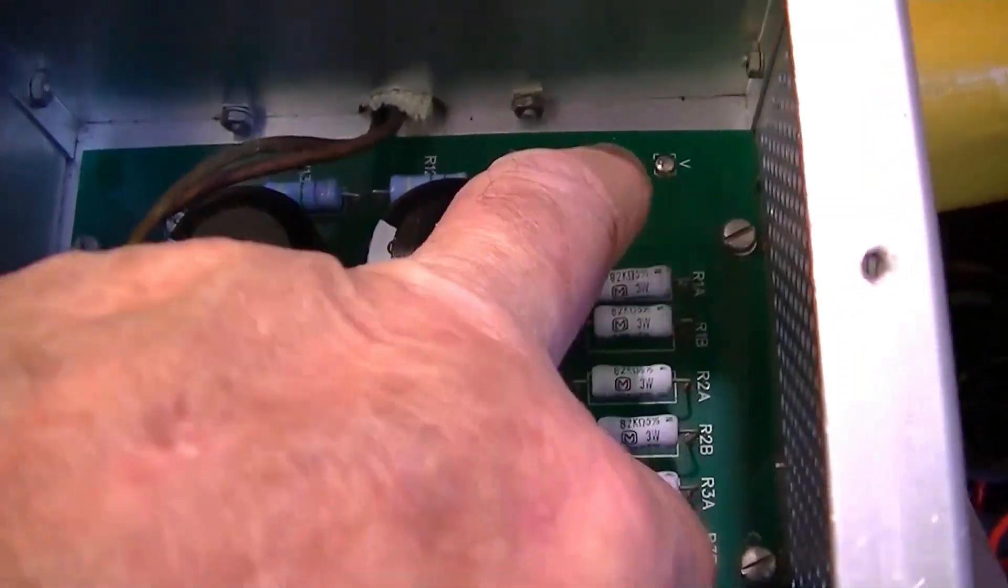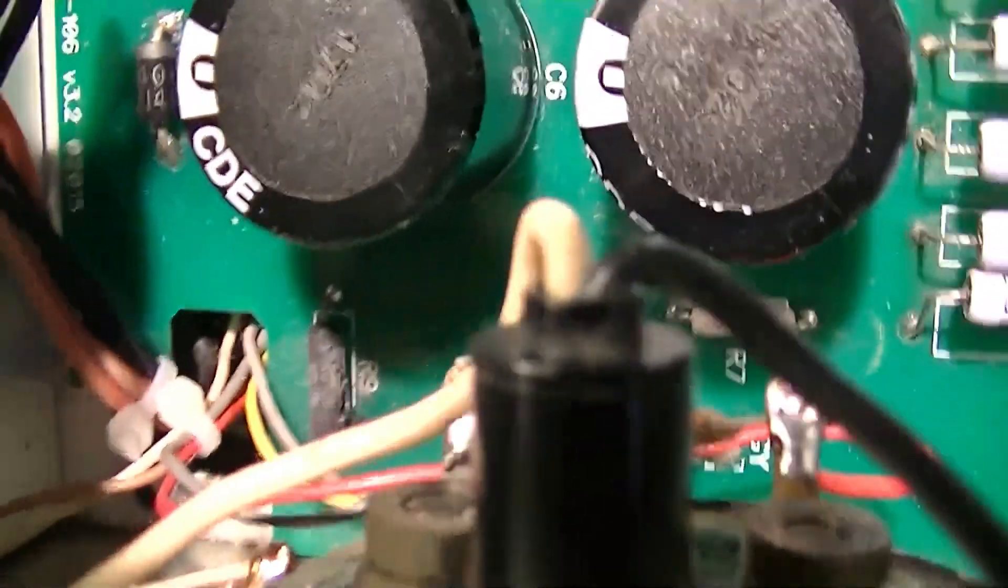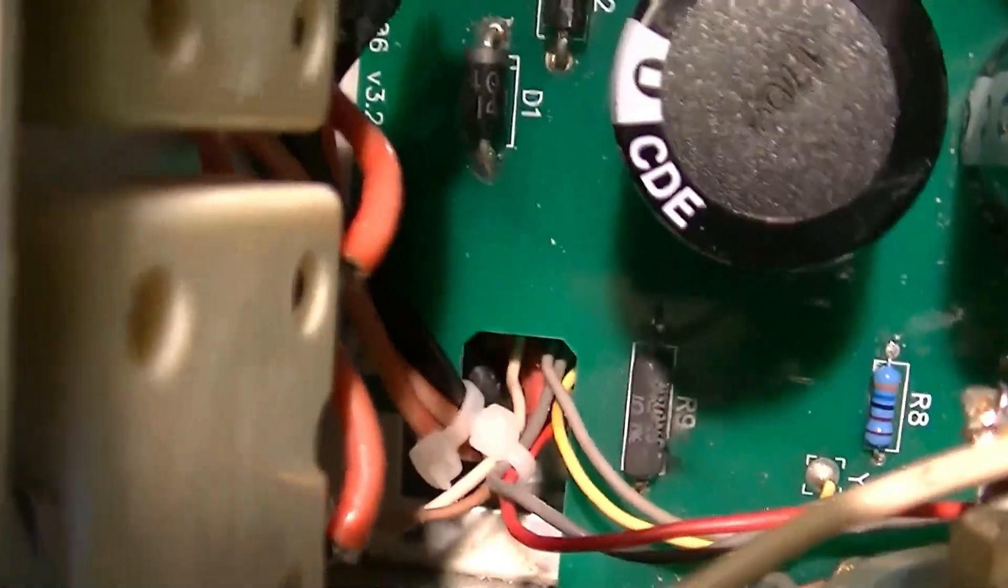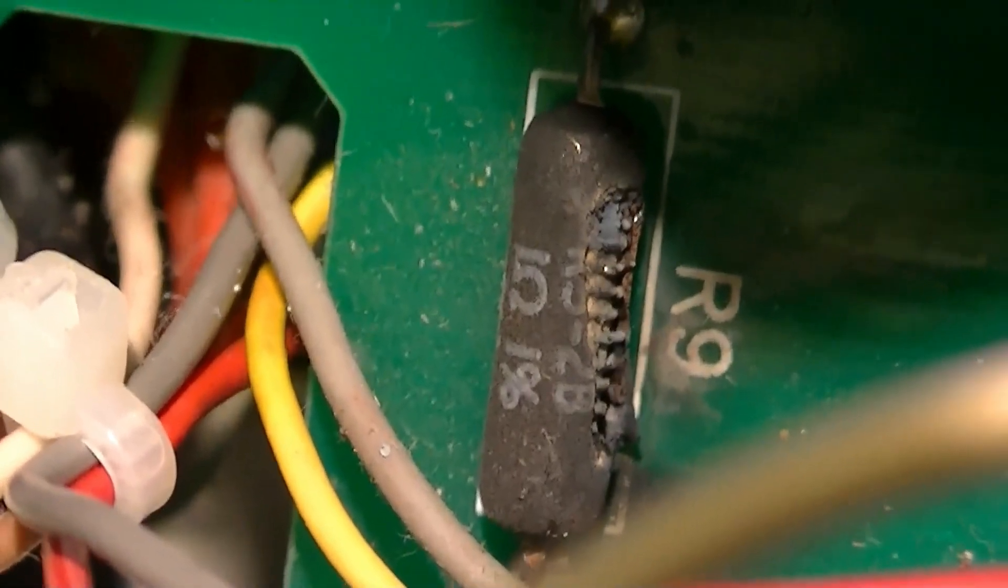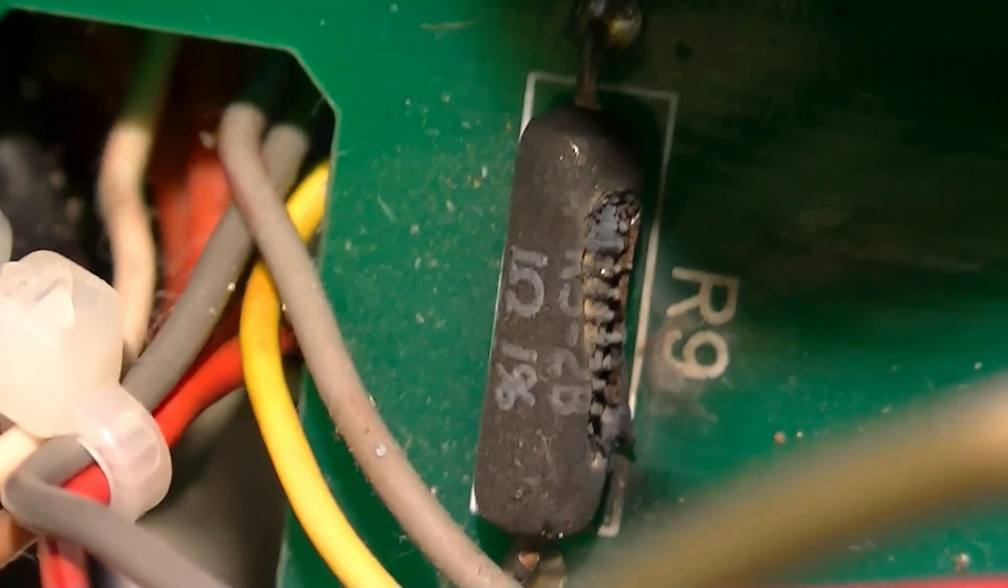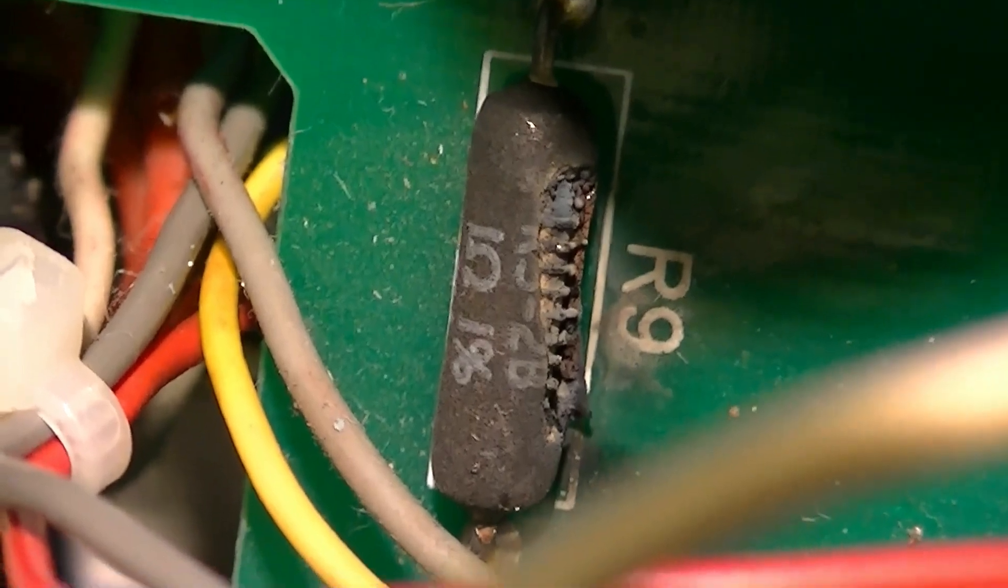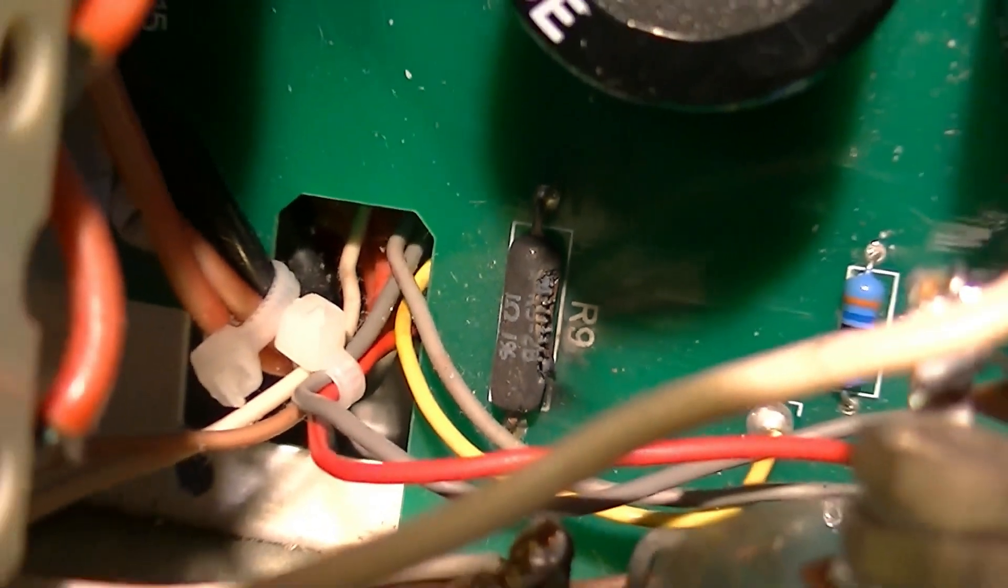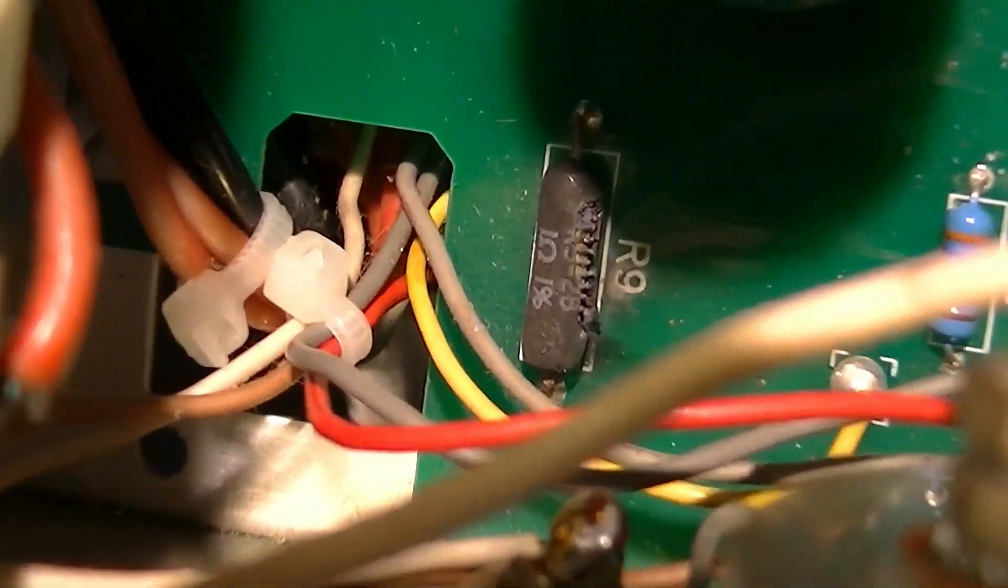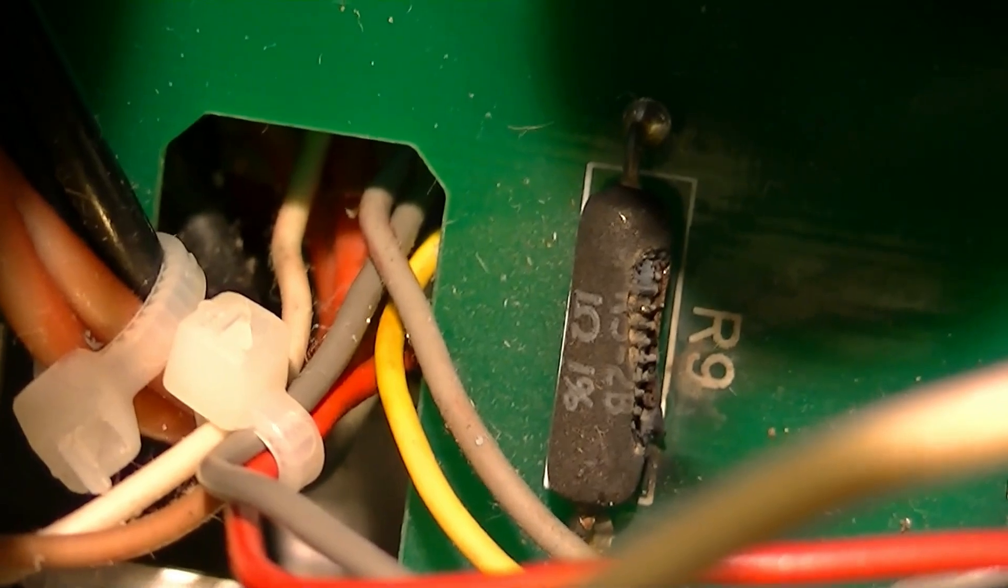Measured all these resistors with an ohm meter and they're okay. We're moving right along and we take a look in here and this thing was kind of buried by the wiring but you can see that it is blown. It's a 1 ohm 1% wire wound resistor. I haven't put the ohm meter on it but you can see that it's not been happy.